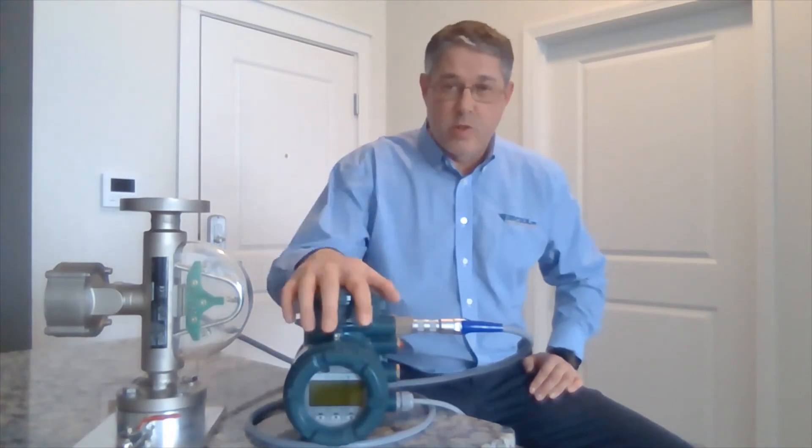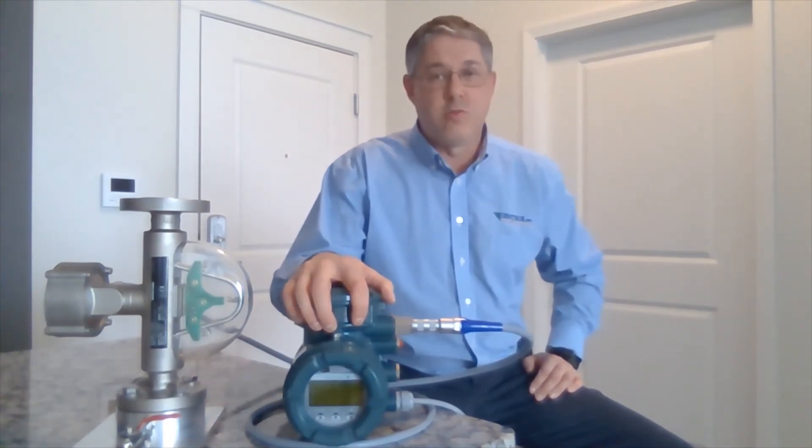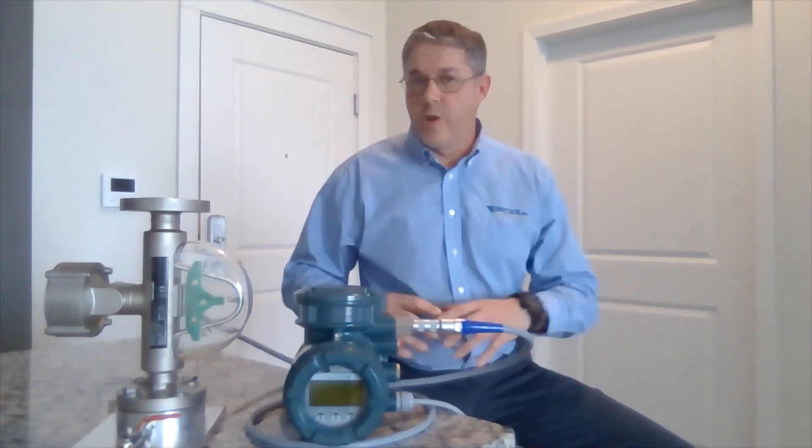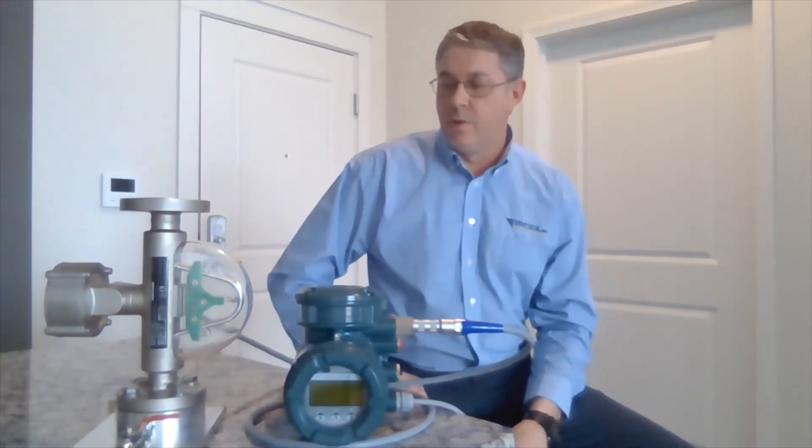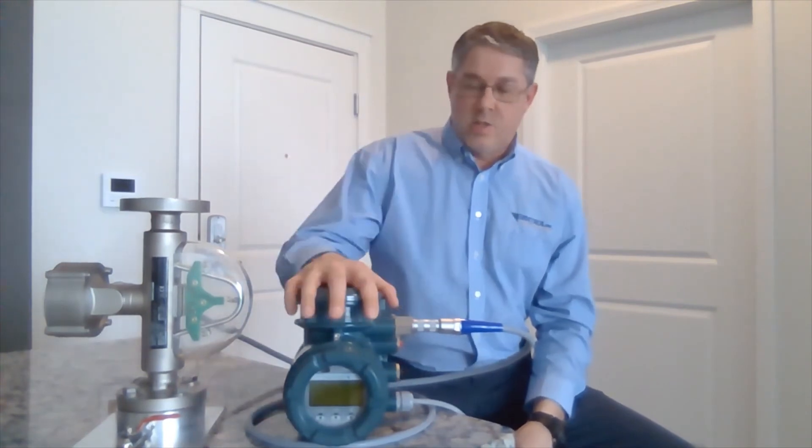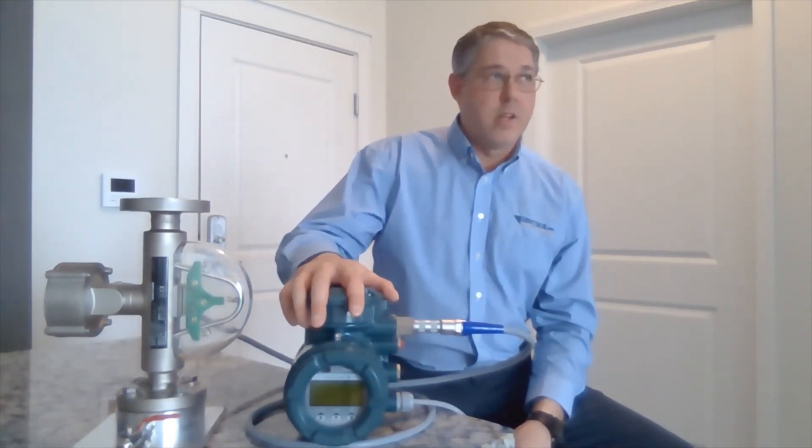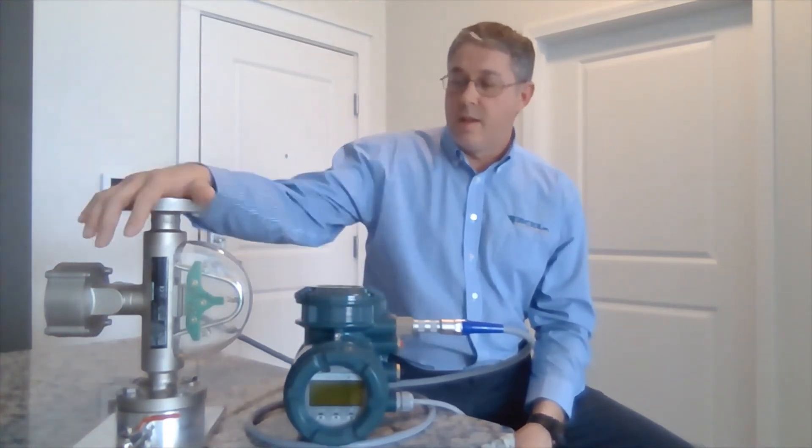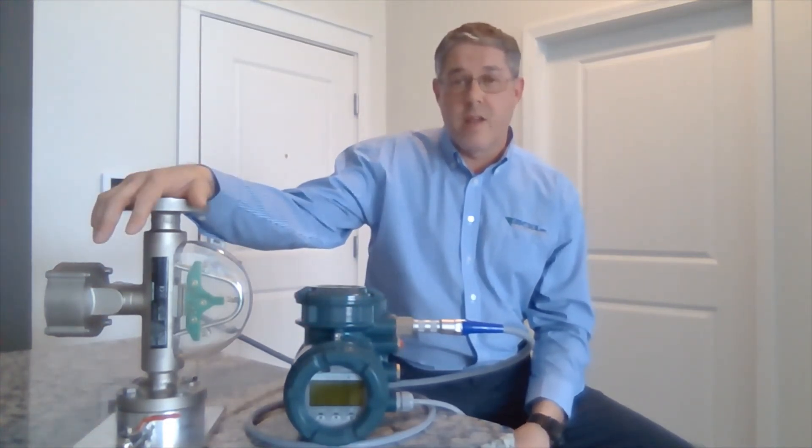It also has a 4 to 20 external input, typically used for pressure compensation. So that's the quick and dirty overview of the Rotomass TI: two heads, different accuracies, different requirements for area requirements, six different tube designs depending on your application needs.